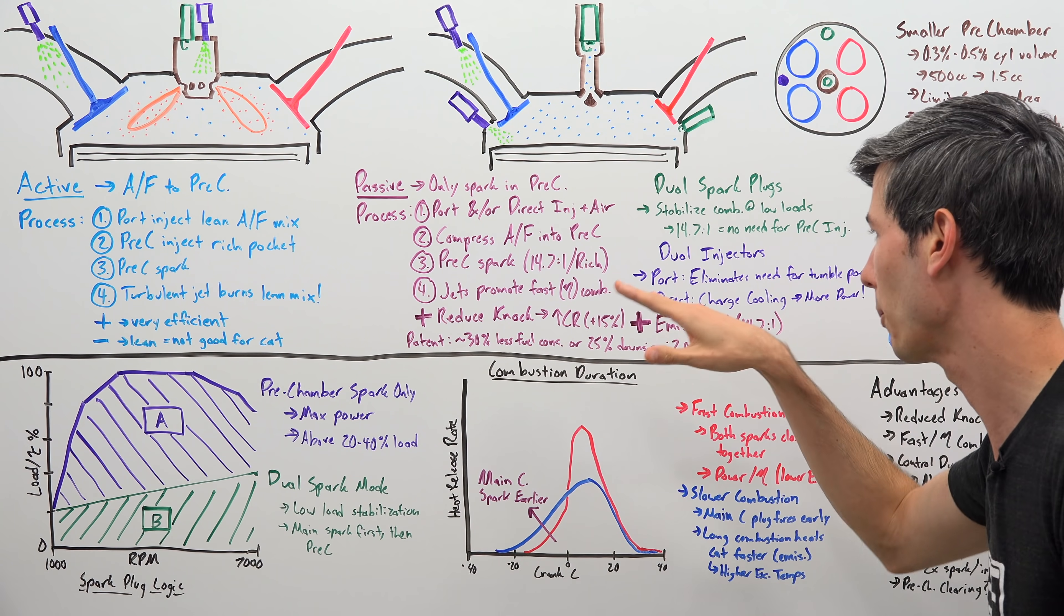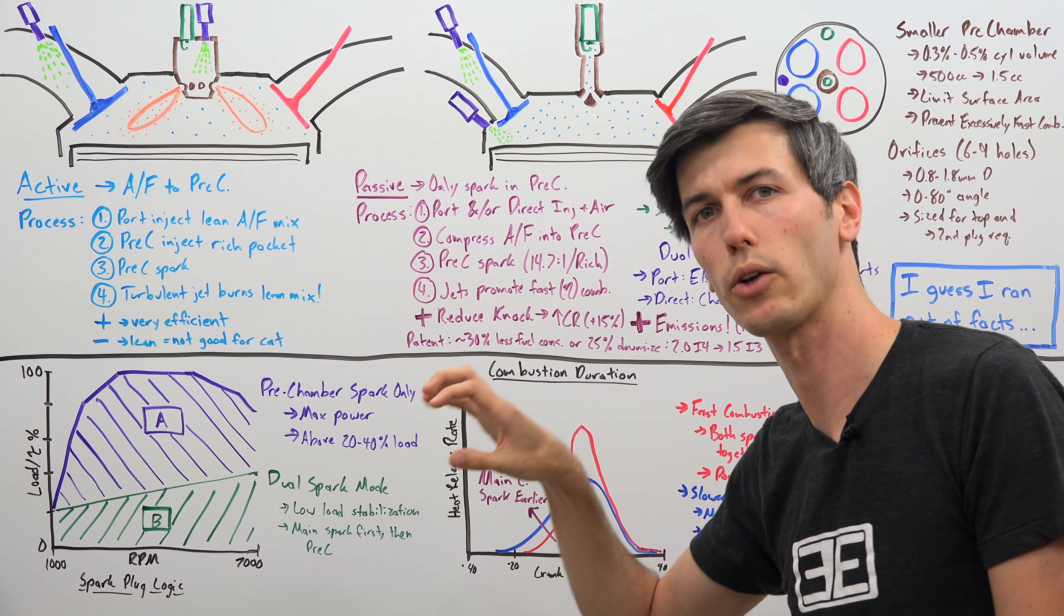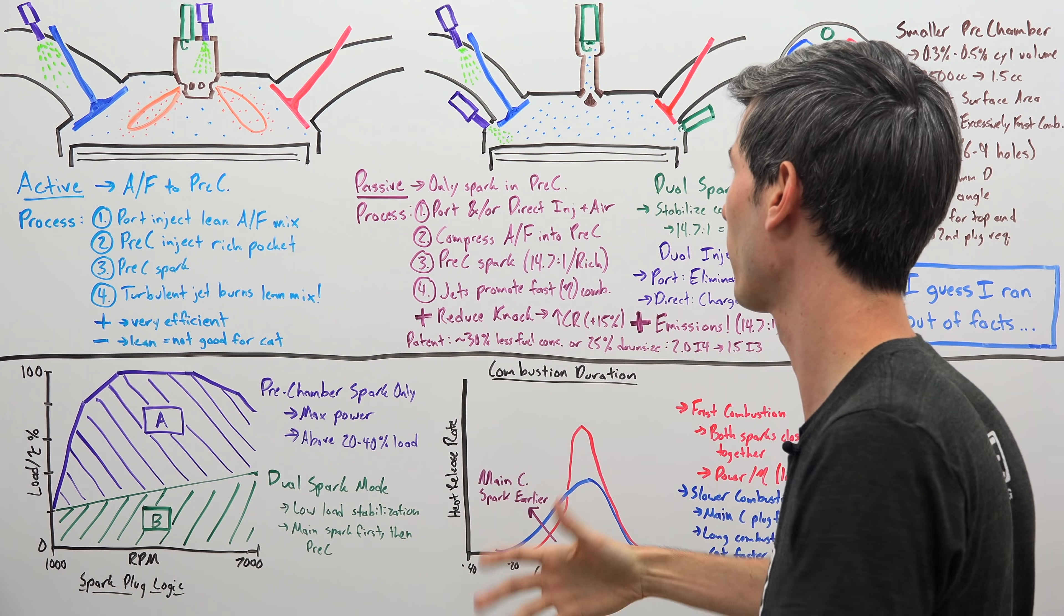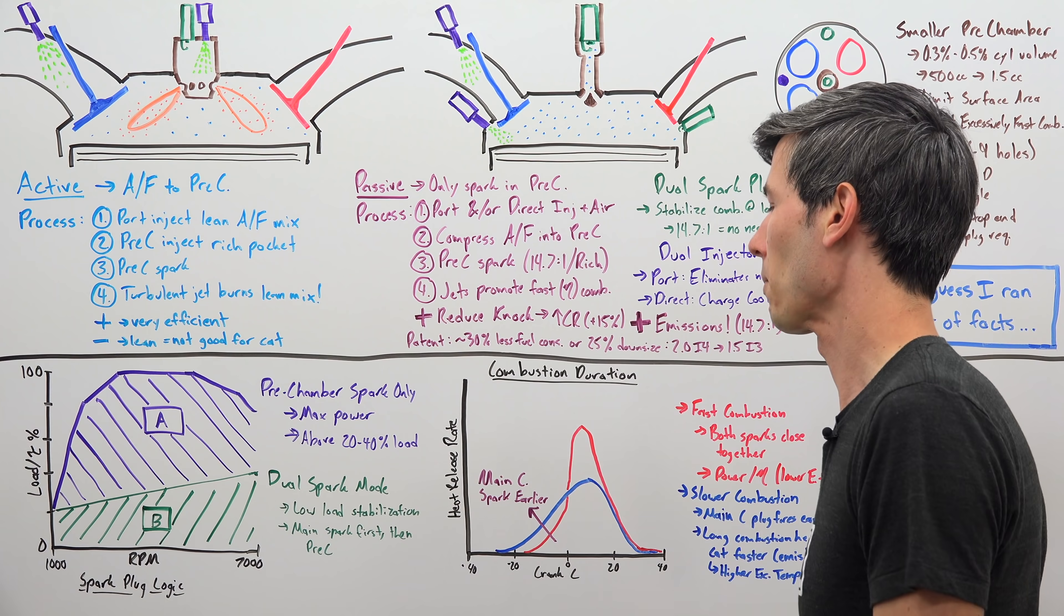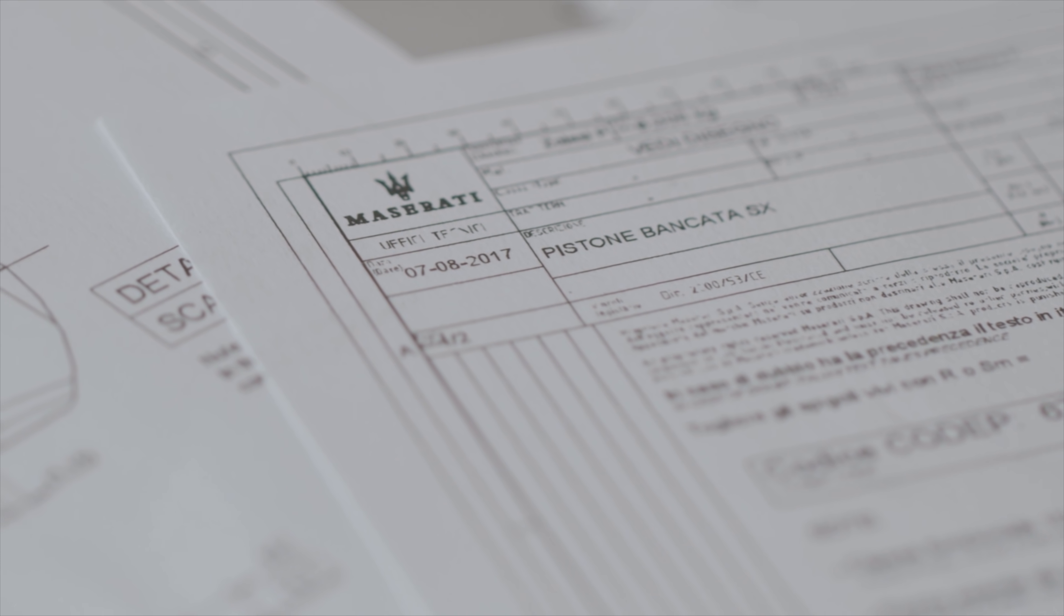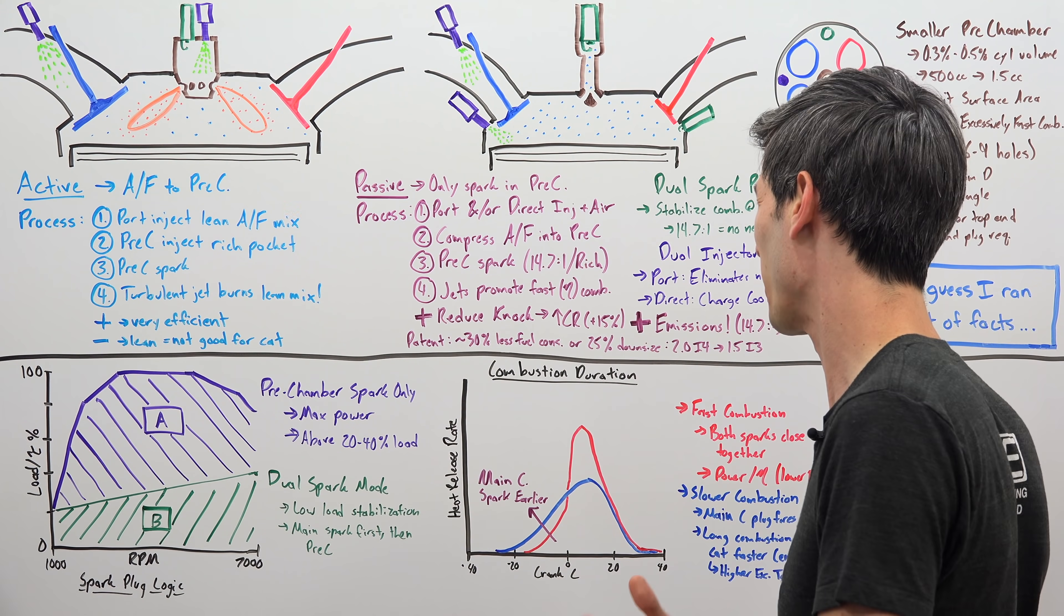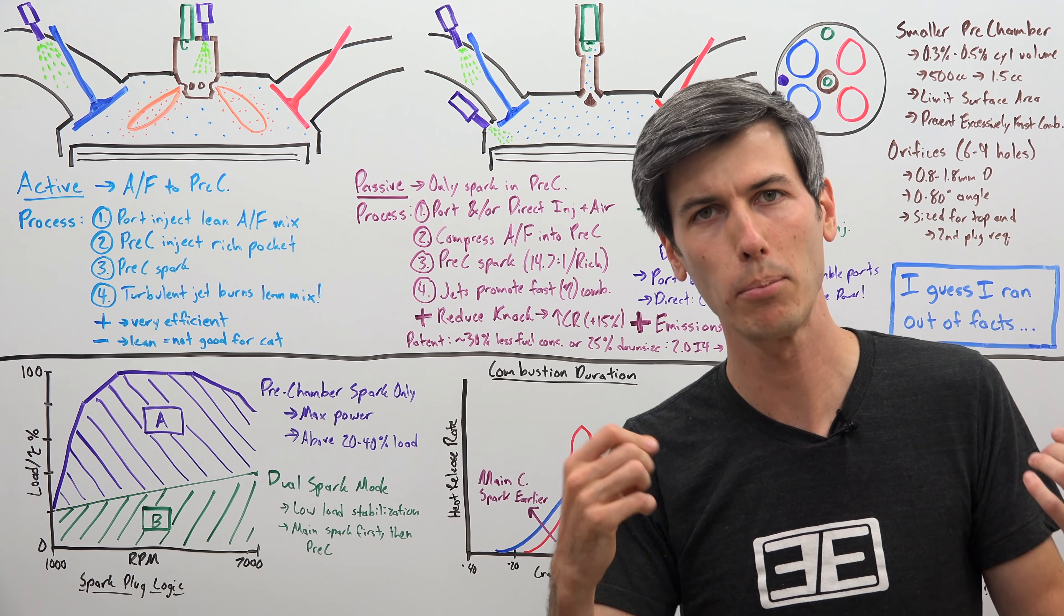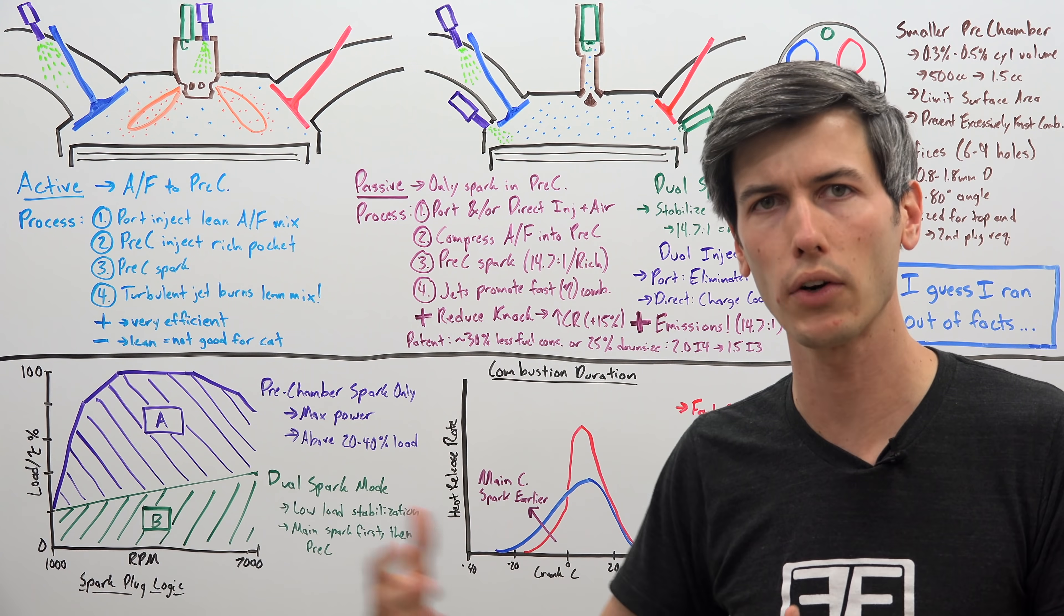So the whole idea of this strategy is to speed up combustion and by doing so, by reducing the time it takes for combustion to occur, you're reducing the likelihood of knock to occur. And so Maserati says according to their patent on this engine that by using this strategy, they're able to increase their compression ratio by 15%. And the big kicker of all of this is that unlike this active system, it's able to meet emissions. Now also according to their patent, they're able to reduce fuel consumption by 30% or have an engine downsized by about 25%. So you can make the same horsepower in a 1.5 liter inline 3 cylinder that you could with a 2.0 liter inline 4 cylinder.